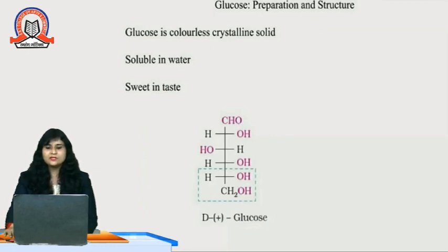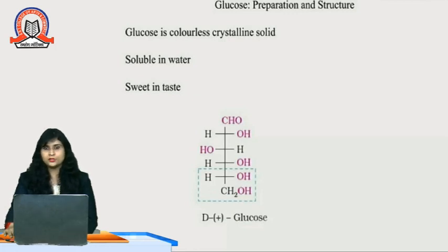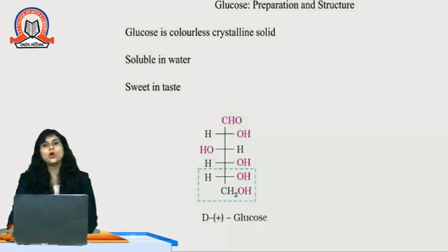Now let's see about the preparation and structure of glucose. Glucose is a colorless crystalline solid and is the instant energy source. If you fall sick, have diarrhea, weakness, or dehydration, we always drink glucose-containing water. Glucose is soluble in water and sweet in taste — all resources which contain glucose are sweet in taste.